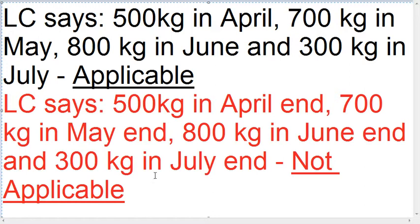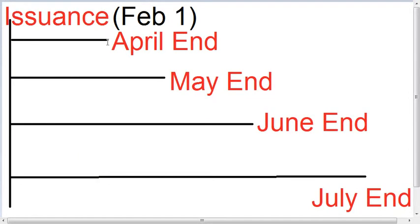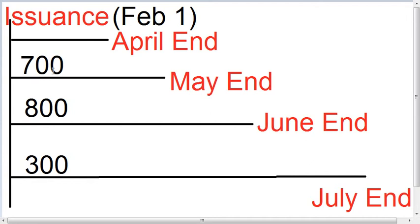For example, if only end dates are given — 500 kg by end of April, 800 kg by end of May, 700 kg by end of June — Article 32 does not apply. The logic is: 'by May end' means I can ship from the LC issuance date all the way through to May end. There is no start date defined, so installment shipment rules are not applicable. As a beneficiary, I could send all shipments on one single date in February, because the only restriction is 'before the end date,' not 'after a start date.'